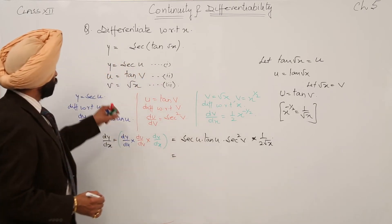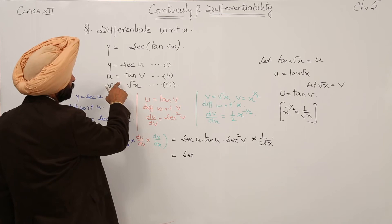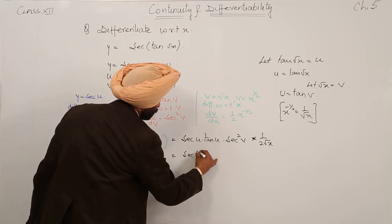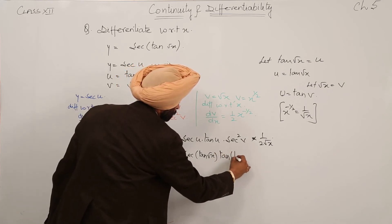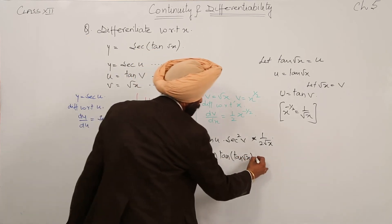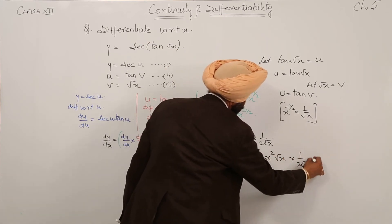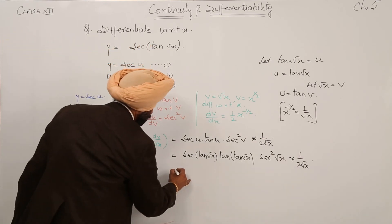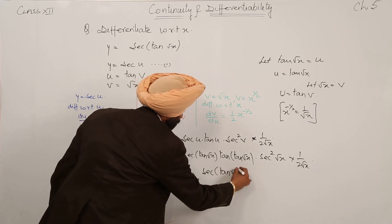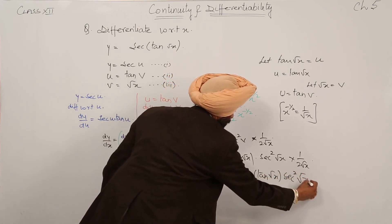Now substituting back: u was tan under root x, so we directly put it in. We get secant of tan under root x, times tan of tan under root x — putting tan v and replacing v with under root x — then into secant square under root x, into 1 upon 2 root x. So the final answer is: 1 upon 2 root x times secant tan under root x times tan tan under root x times secant square under root x.